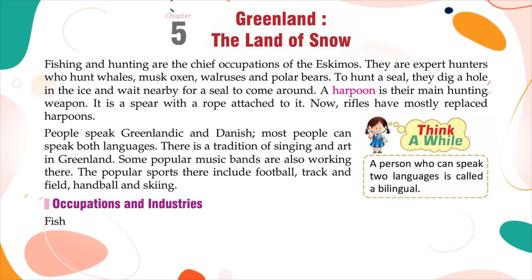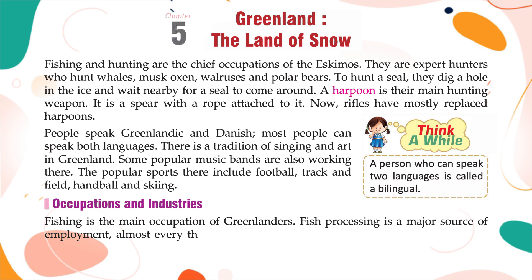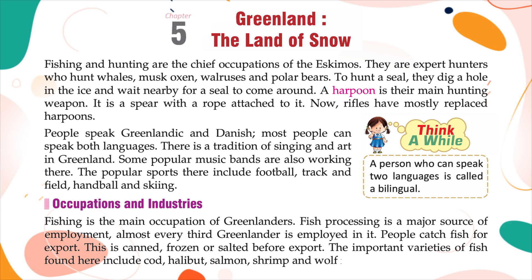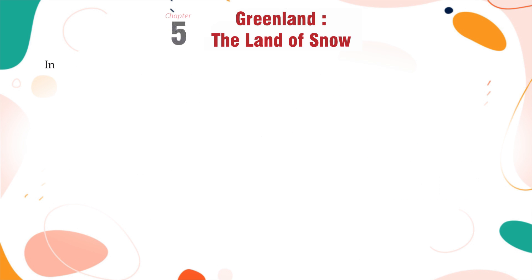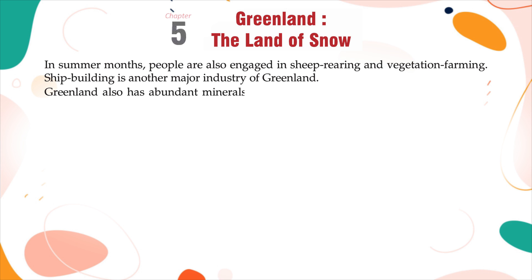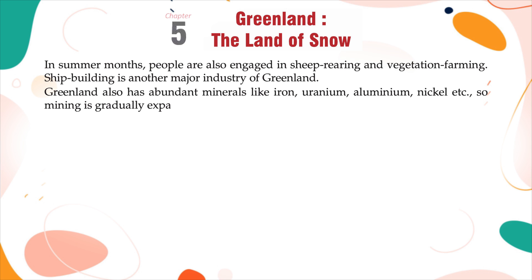Occupations and Industries: Fishing is the main occupation of Greenlanders, and fish processing is a major source of employment — almost every third Greenlander is employed in it. Fish is canned, frozen, or salted before export. Important varieties include cod, halibut, salmon, shrimp, and wolffish. In summer, people are also engaged in sheep rearing and vegetation farming. Shipbuilding is another major industry. Greenland also has abundant minerals like iron, uranium, aluminium, and nickel, so mining is gradually expanding.